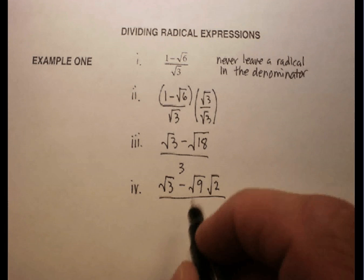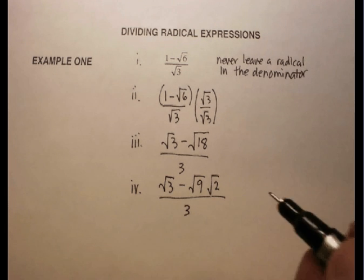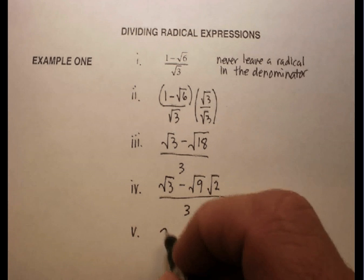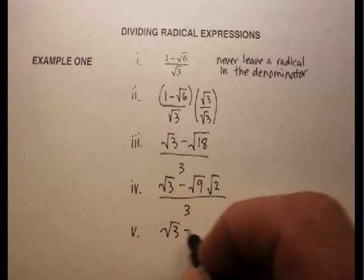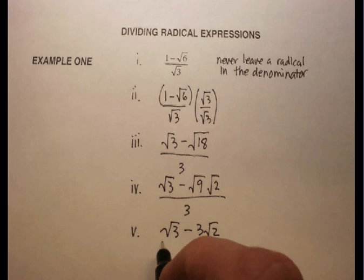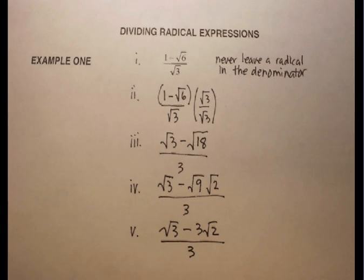And again, I'm going to put that over 3. Solving that little individual problem gives me radical 3 minus 3 radical 2, all over 3.